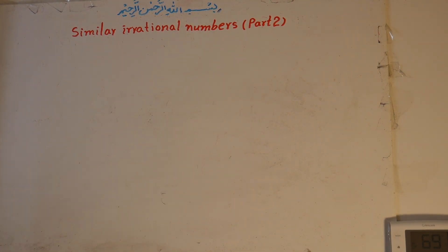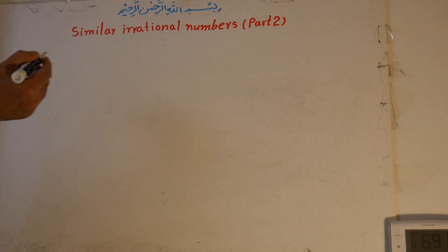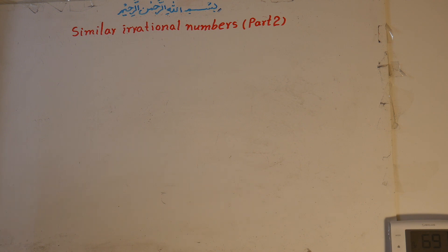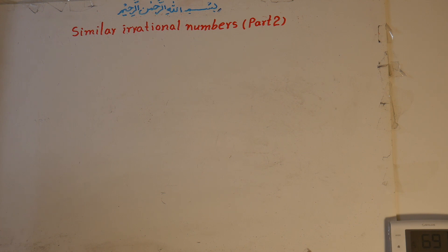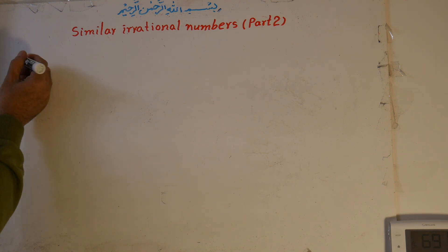Welcome to mathematics class. Our topic is similar irrational numbers, Part 2. In Part 1, we discussed what similar irrational numbers are, and we said that we cannot add or subtract numbers if their irrational parts are not the same or similar. Here I will show you some more examples.